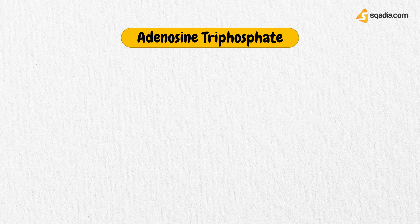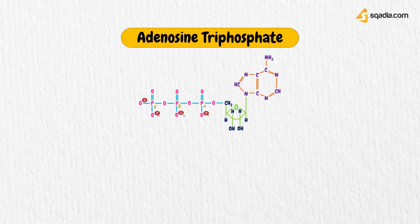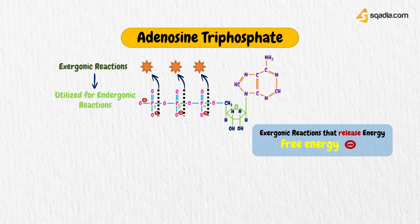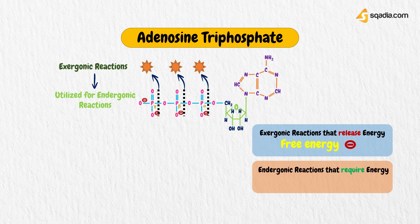The nucleotide coenzyme adenosine triphosphate, ATP, is the most important form of chemical energy in all cells. Cleavage of ATP is strongly exergonic. An exergonic reaction is a type of spontaneous reaction where there is release of free energy — here, free energy is negative, less than zero. The energy this provides is used to drive endergonic processes, where energy enters the system and free energy is positive, such as biosynthesis, movement, and transport processes, through energetic coupling.